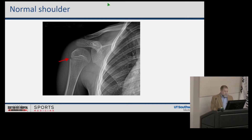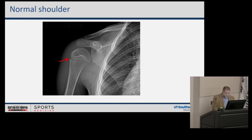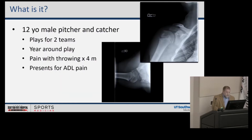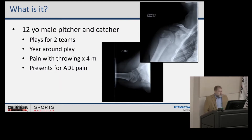When talking about Little Leaguer's Shoulder, it's important to look at what normal shoulder anatomy is in a pediatric patient. Where my arrow is, that's what a normal physis looks like at the proximal humerus. Our case is a 12-year-old male who plays both pitcher and catcher.